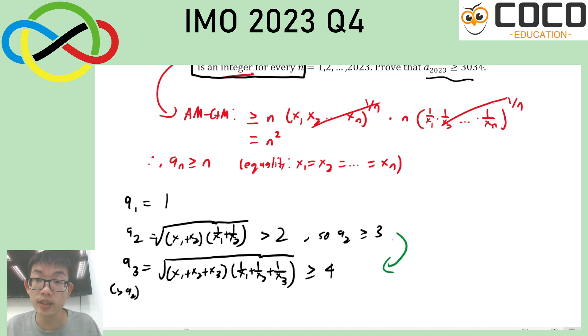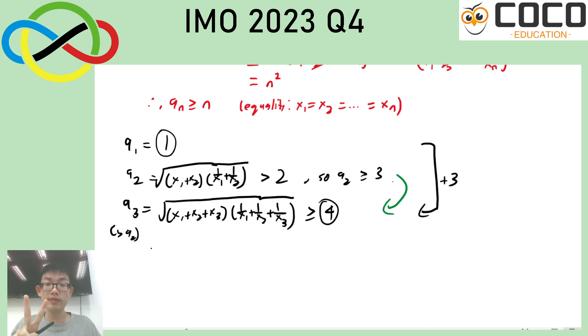But I realize that this 3034 is about 3,000, this is about 2,000. It means that it's about 3 over 2 in terms of ratio. And here, I have managed to increase it by 3 from 1 to 4. So what I would like to do is that I would like to make sure that each time I take 2 steps, I will increase by at least 3. Because if a3 is at least 4, and then a5 is at least 7, a7 is at least 10, and so on, this should work. Because it would give me 2023 over 2, which is 1011 steps of size 3.